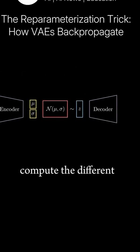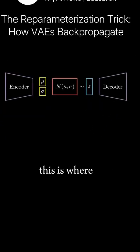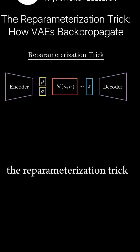We can then compute the different parts of the ELBO loss and backpropagate it through the network. This is where the reparameterization trick comes in.